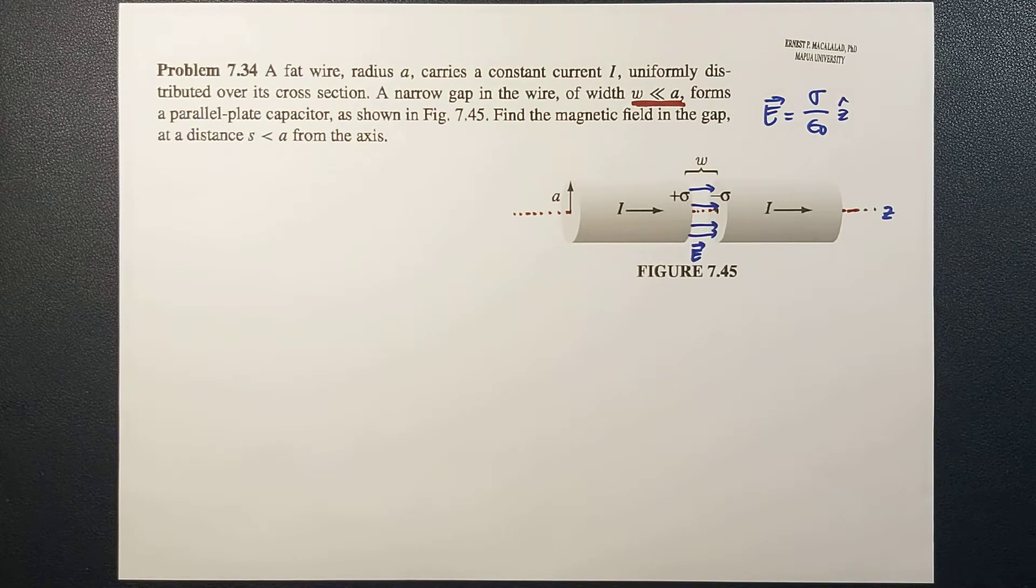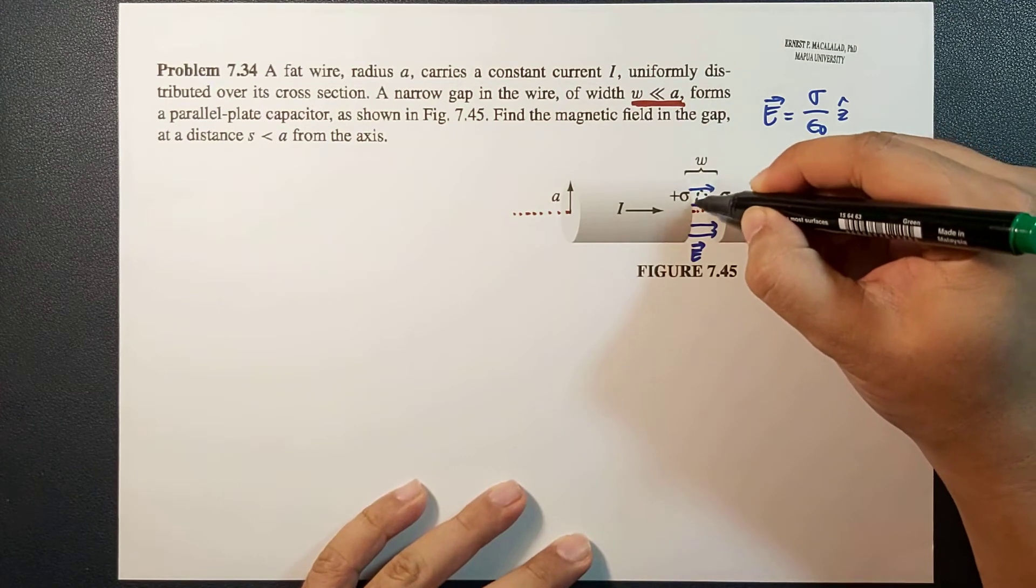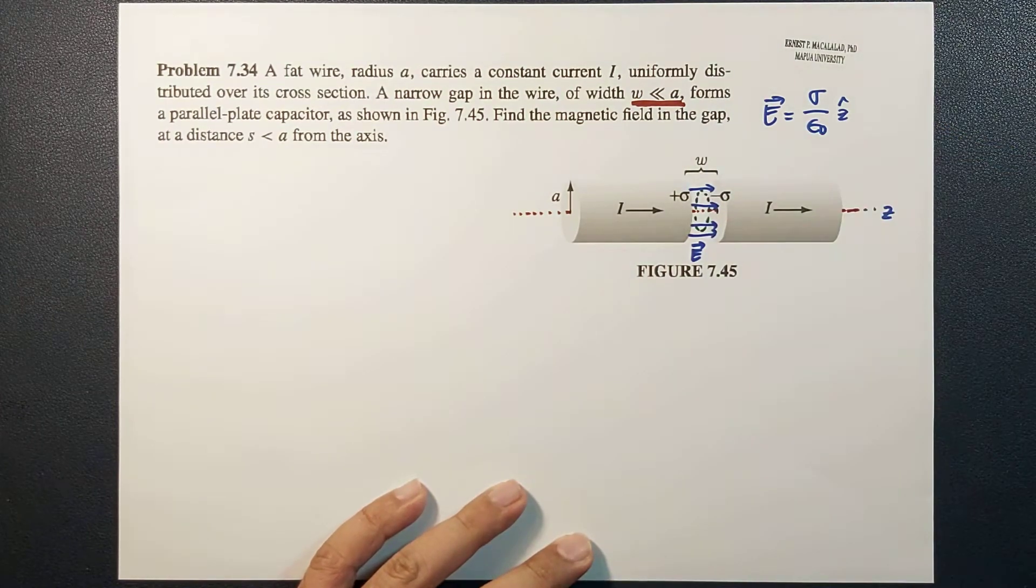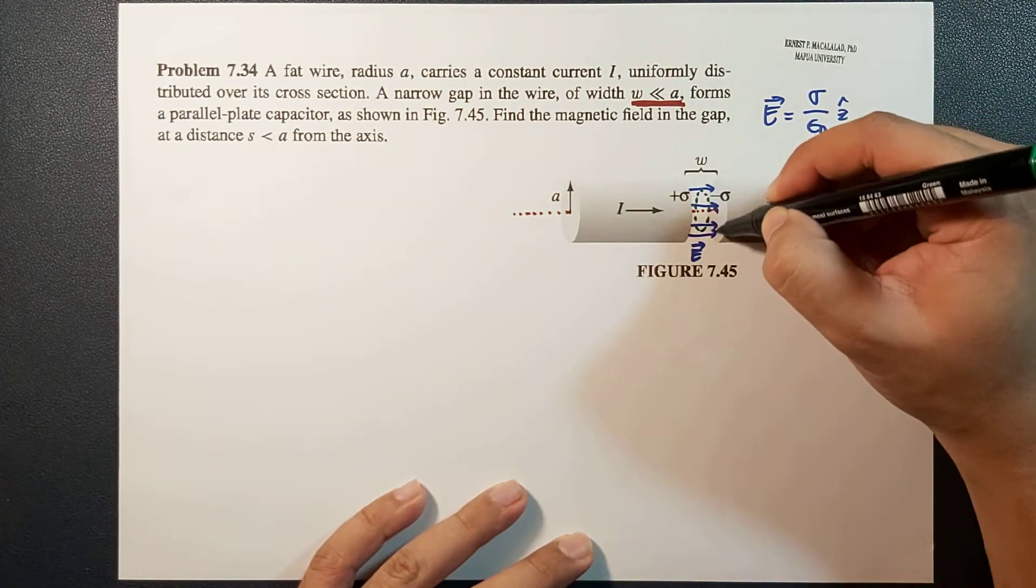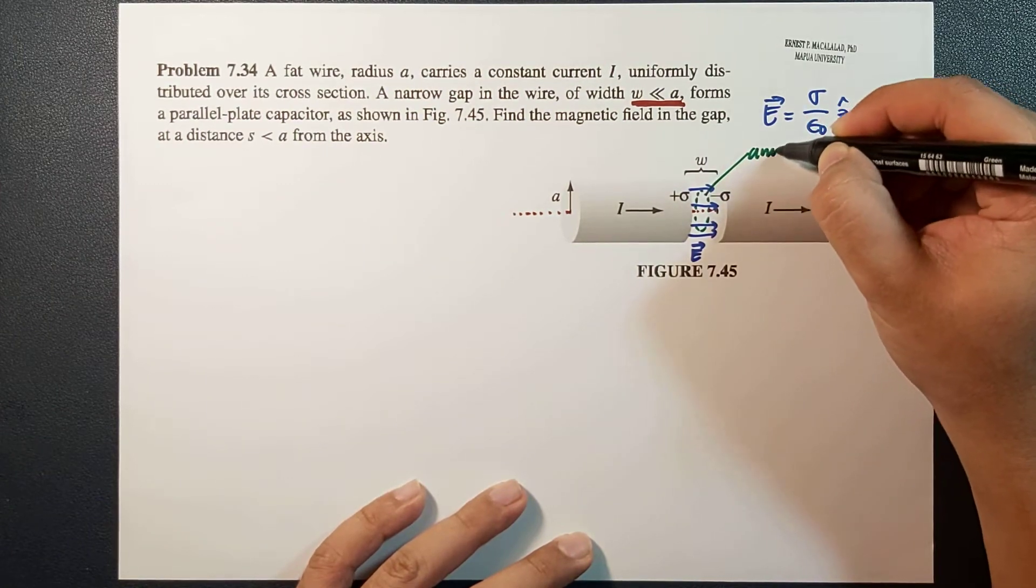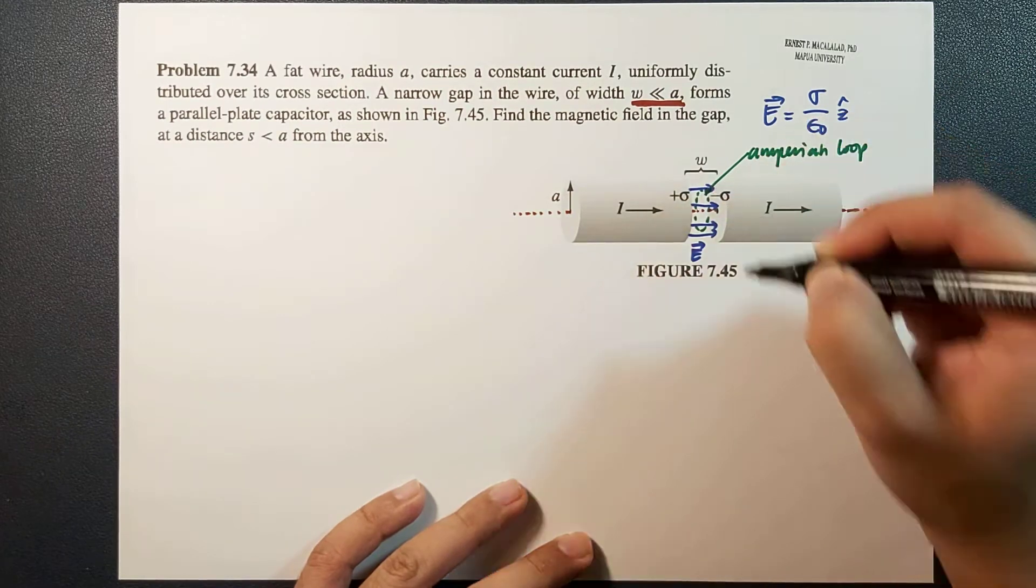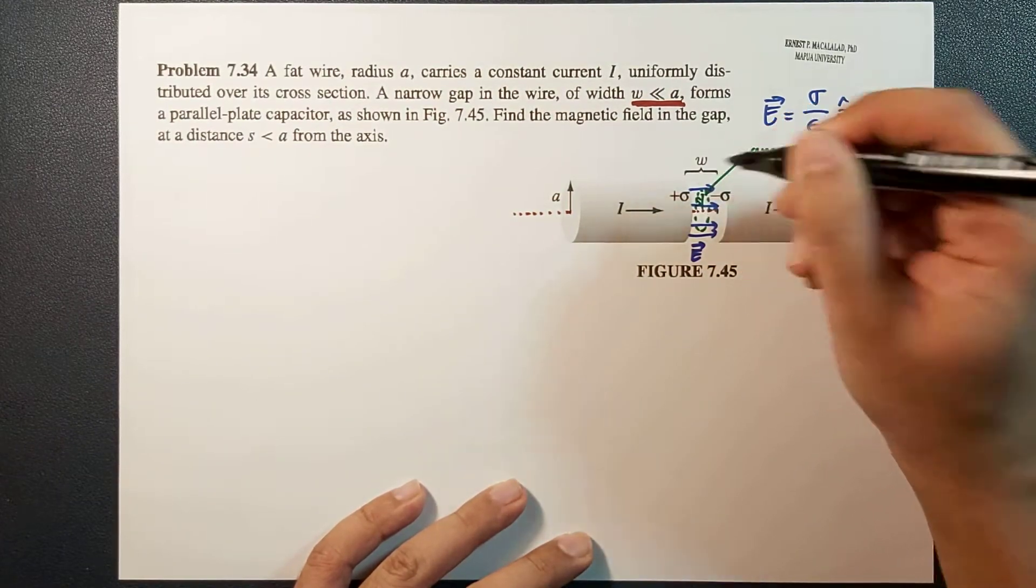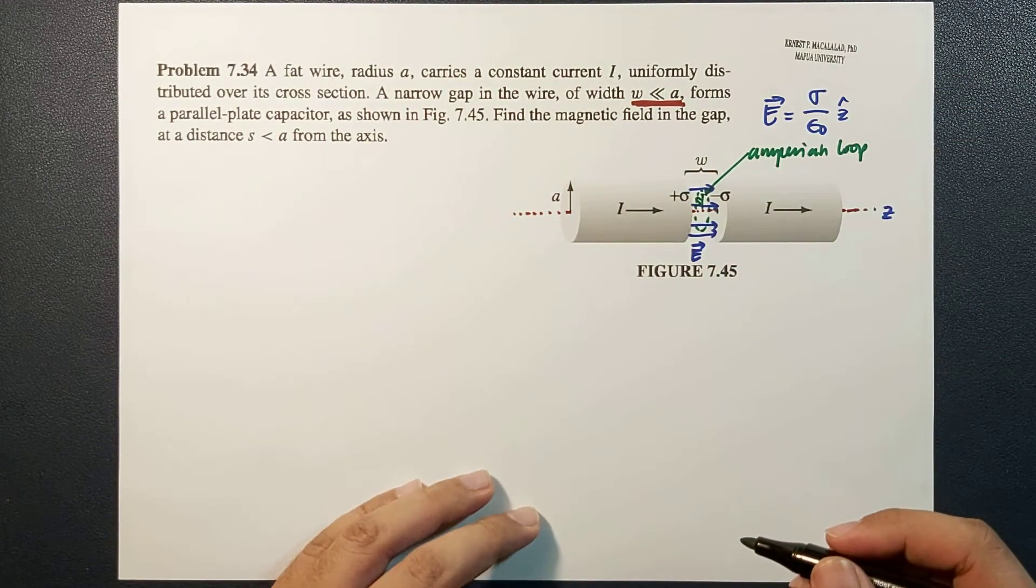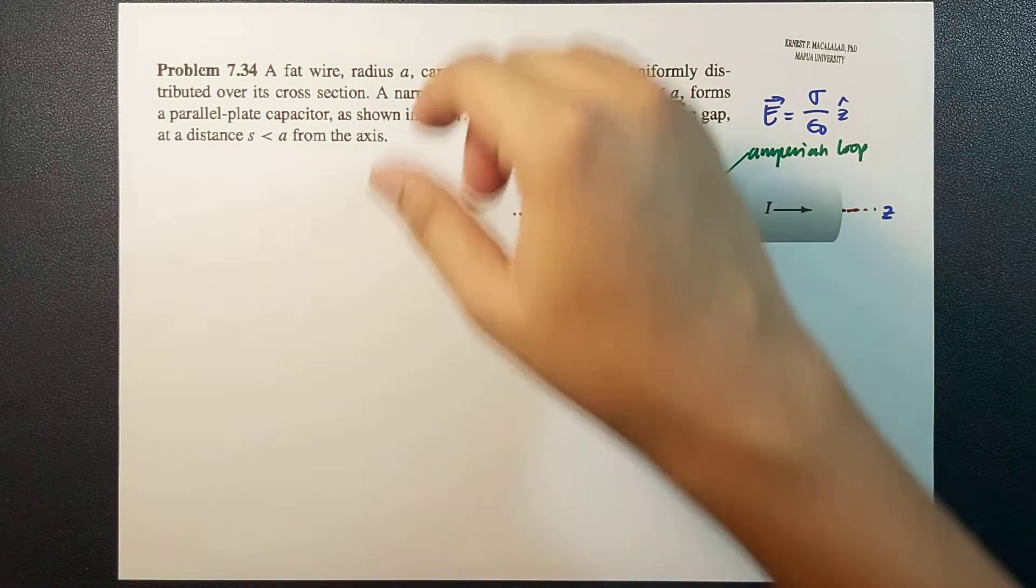Okay, so if we're going to set our Ampere loop to get the magnetic field in the gap, we set the Ampere loop like this, which is a circular Ampere loop. So that is a loop of radius S.